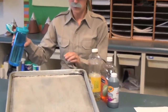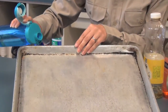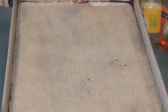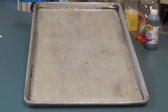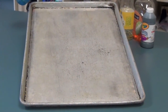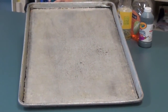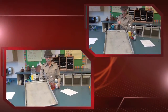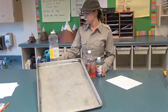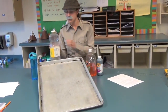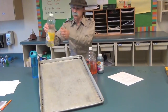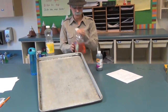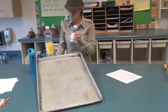This is lava number one. I'm going to pour it down on one side and see how quickly it flows. Now that you've done lava number one, you're going to do lava number two, you're going to do the oil, you're going to do the soap, you're going to do the molasses.